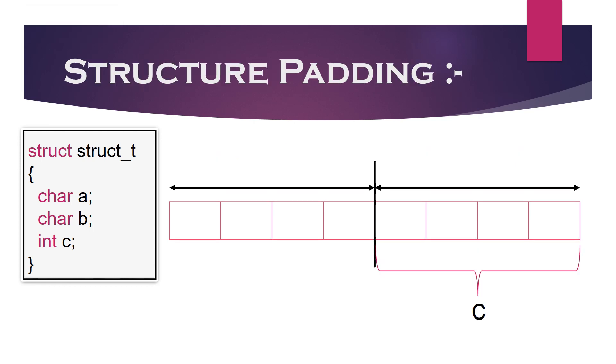Due to this reason, the structure padding concept was introduced to save the number of CPU cycles. It aligns the data in the memory by adding one or more empty bytes between the structure members.